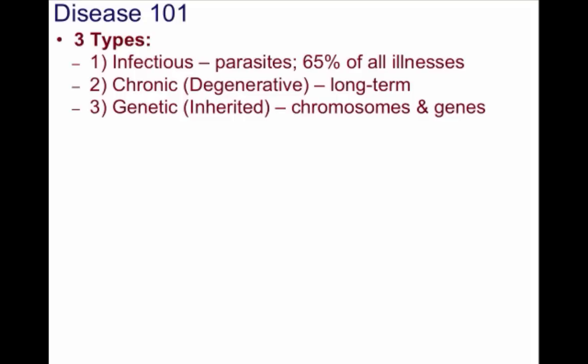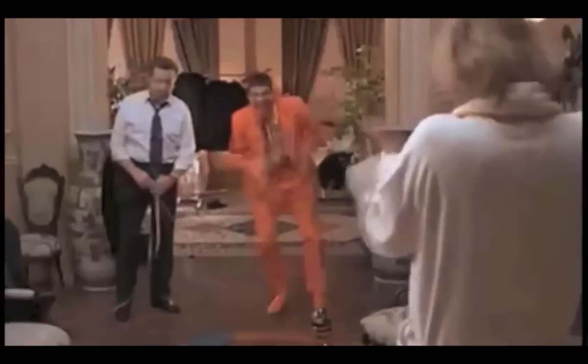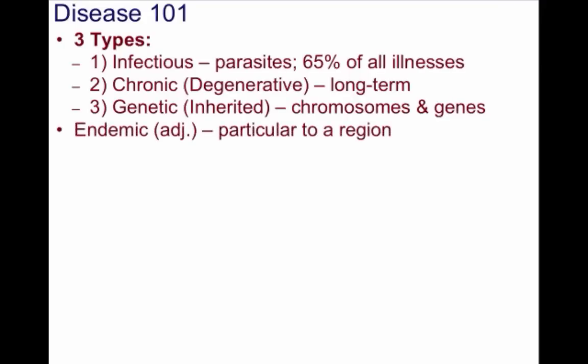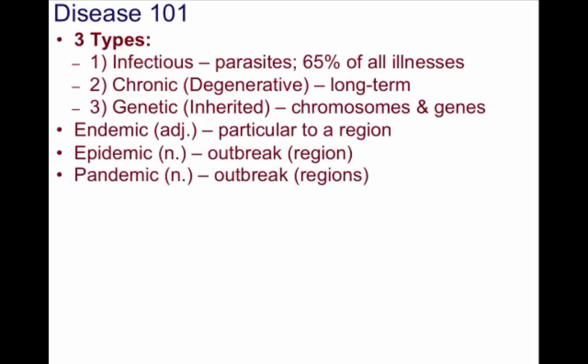The question of which kind of disease you may contract is really answered by geography. A disease can be endemic, or particular to a specific region. A disease can be an epidemic, which is an outbreak in a given region, or a pandemic, in which it's an outbreak across more than one region.